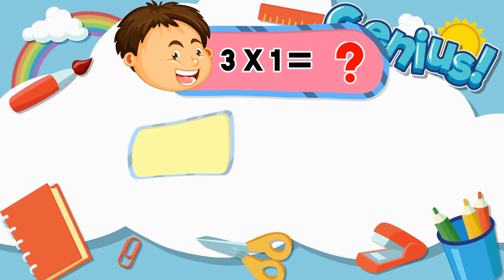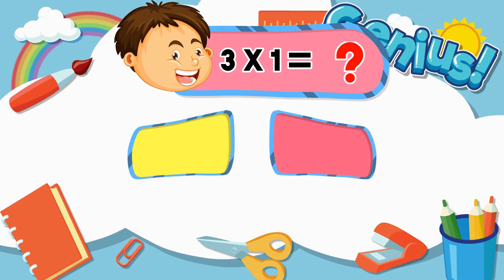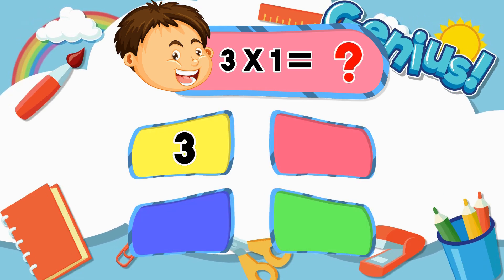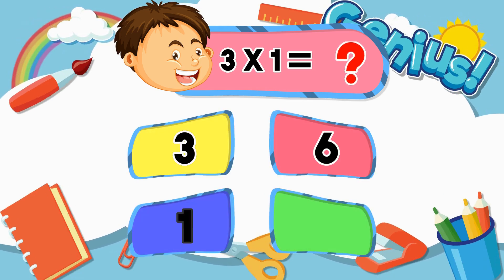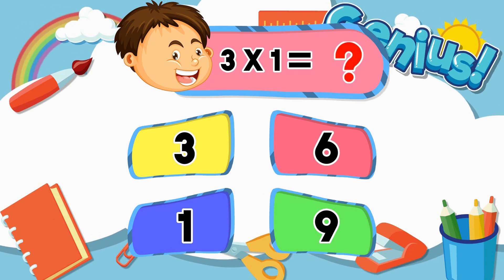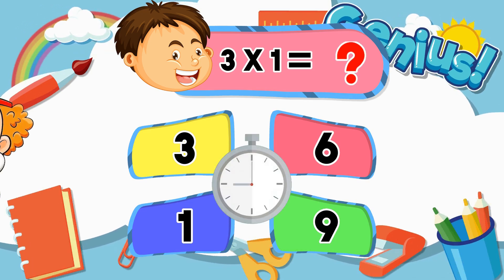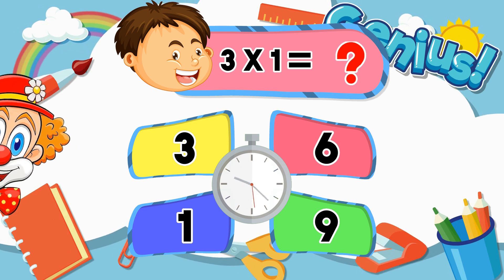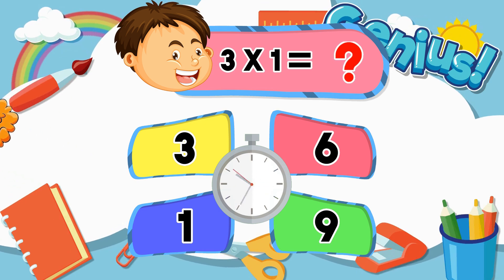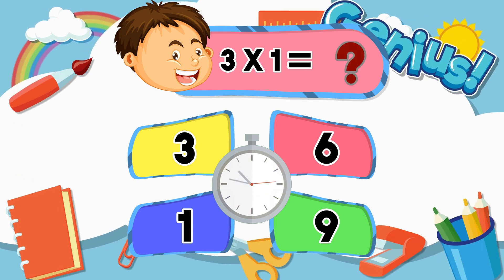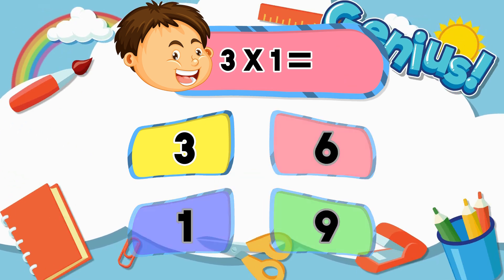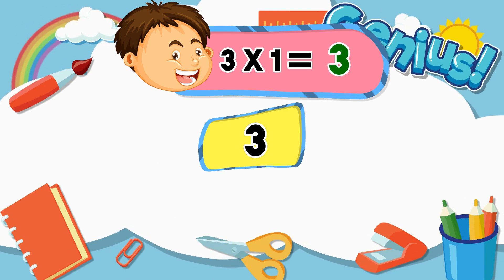What is 3 times 1? 3. 6. 1. 9. Correct answer: 3.